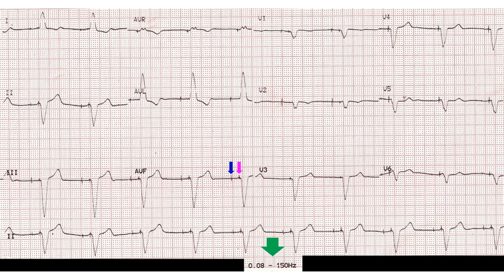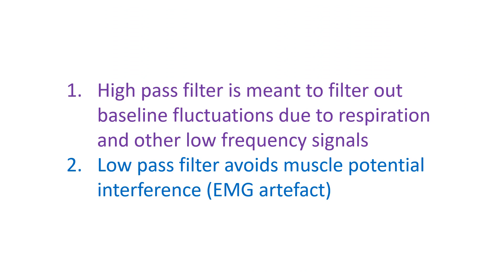This highlights the importance of appropriate ECG filter settings for each case. The high pass filter is meant to filter out baseline fluctuations due to respiration and other low frequency signals, while the low pass filter avoids muscle potential interference. In addition, most ECG machines have a notch filter at 50 Hz to specifically filter out line voltage interference.